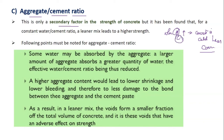At a constant water-to-cement ratio, a leaner mix leads to higher strength. That is, when the aggregate-by-cement ratio increases, the strength of the concrete also increases.